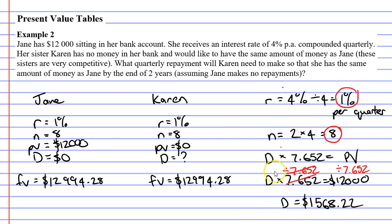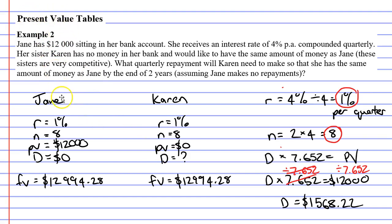$1,568.22 is the solution for example two. This is the repayment that Karen must make every quarter if she hopes to have the exact same future value that Jane will have, remembering that Jane did not make repayments — she just started off with a lump sum at the beginning. When solving a question like this, the only work you need to show is the calculation on the right. The left-hand side showing Jane and Karen was just to help visualize what's happening. Remember to read the description below for links to workbooklets related to this video.